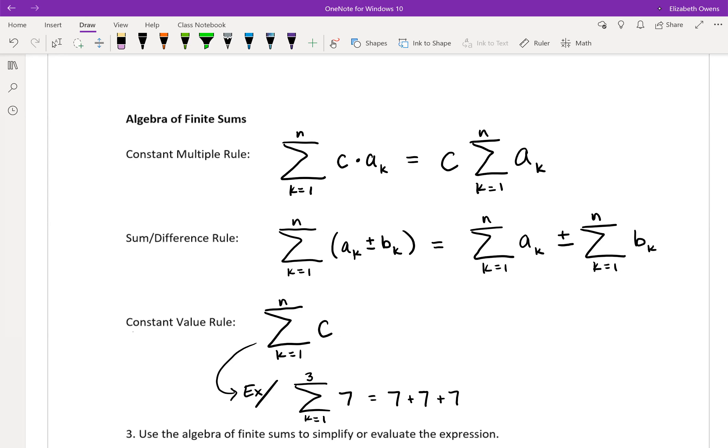Or you could think of this as 3 times 7 to get 21 there. So this idea here is what we're going to use for our constant value rule. Notice how this 3 was just the ending index right there.